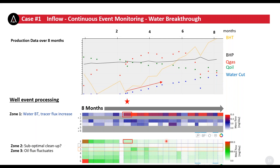In zone two, we can see very poor mass flow from the beginning — even after cleanup, a few months later we're still not getting much contribution, which could indicate a sub-optimal cleanup of zone two. In zone three, the oil mass flow is fluctuating, giving some indication that something unusual is happening from an oil perspective. This is a typical service provided to operators who regularly take samples while the well is on steady-state production, and we can plot these trends for each zone to understand how the well is performing over time.